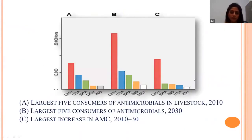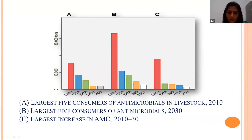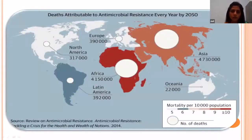The most commonly seen superbugs in sheep and goat farms are E. coli and Staphylococcus aureus. A graph shows India ranked fifth in antimicrobial consumption in 2010, fourth among the largest five antimicrobial-consuming countries, and third in projected increase in antimicrobial consumption from 2010 to 2030 — indicating urgency in combating AMR. A projected graph shows anticipated AMR-related deaths by 2050.